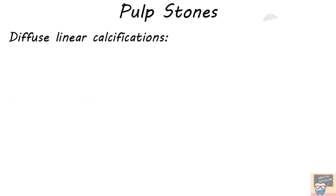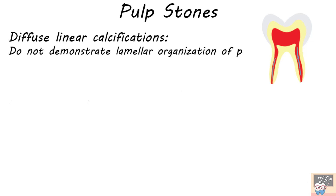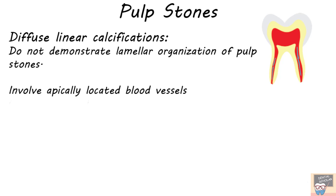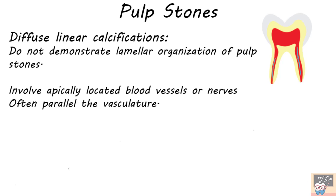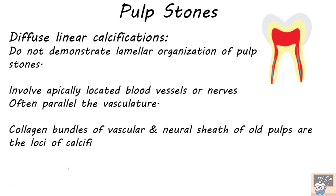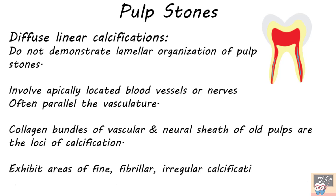Diffuse linear calcifications do not demonstrate the lamellar organization seen in false pulp stones, nor the tubular organization of true pulp stones. They usually form around apically located blood vessels and nerves and are often parallel to the vasculature, appearing as linear calcifications in the radicular pulp oriented parallel to the vessels. The collagen bundles of the vascular and neural sheath of old pulp are the usual loci of calcification, exhibiting fine, fibrillar, and irregular calcification. Their frequency increases with age, so they are more common in older teeth.